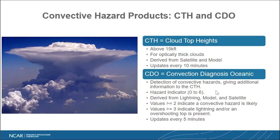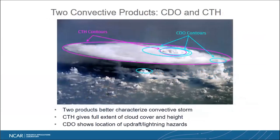CDO can be updated every five minutes because the lightning feed tends to be more frequently available. So why two products? The CTH really defines the larger anvil of the cloud system, and the CDO narrows in and characterizes the convection more closely, cueing in on the updrafts and vertical velocity that could be more turbulent.